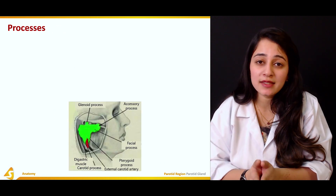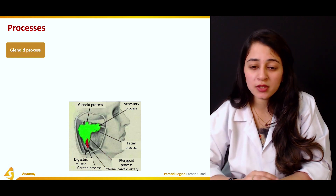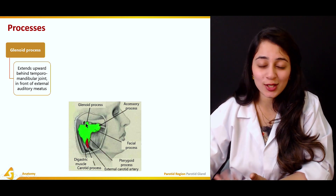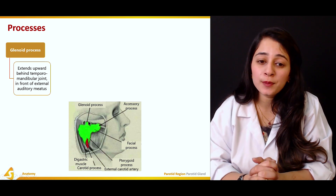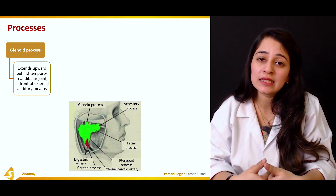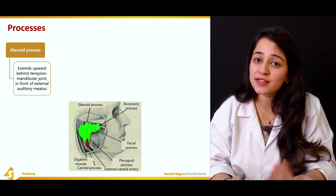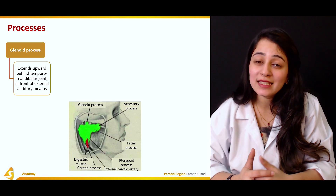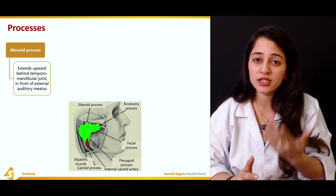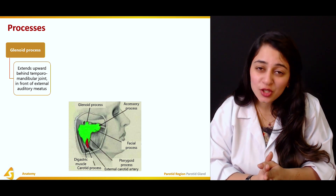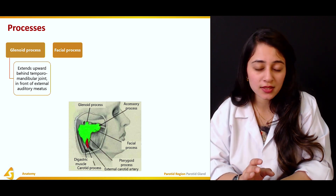There are multiple processes of the parotid gland. The first is the glenoid process, which extends upward behind the temporomandibular joint and in front of the external auditory meatus of the ear.